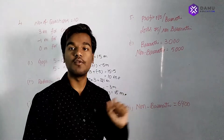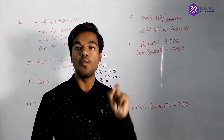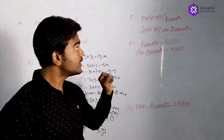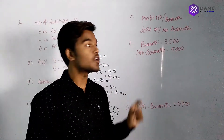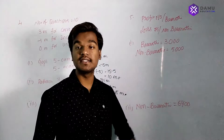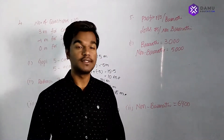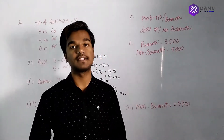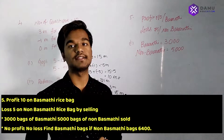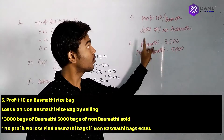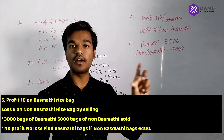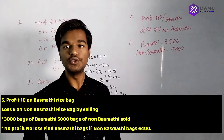Next question: a merchant is going to sell basmati rice and non-basmati rice. For basmati rice, for each bag he will get 10 rupees profit. For non-basmati rice, he will get a loss of 5 rupees. The number of basmati rice bags sold is 3,000, and non-basmati rice bags sold is 5,000. We need to find whether he gets profit or loss.